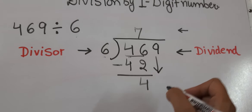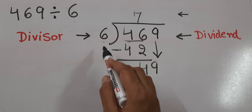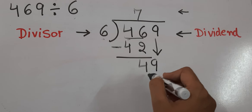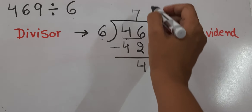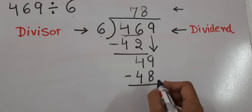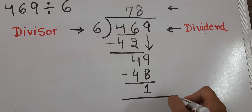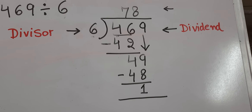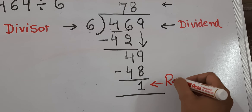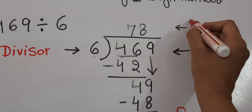Now we divide 49. From the table of 6: 6 eights are 48, which is the nearest smaller number to 49. We subtract 48 from 49 and 1 remains. This 1 cannot be divided by 6, so it stays as it is. Because this 1 is left at the end and is not divisible, it is known as the remainder. The answer we obtained — 78 — is known as the quotient.